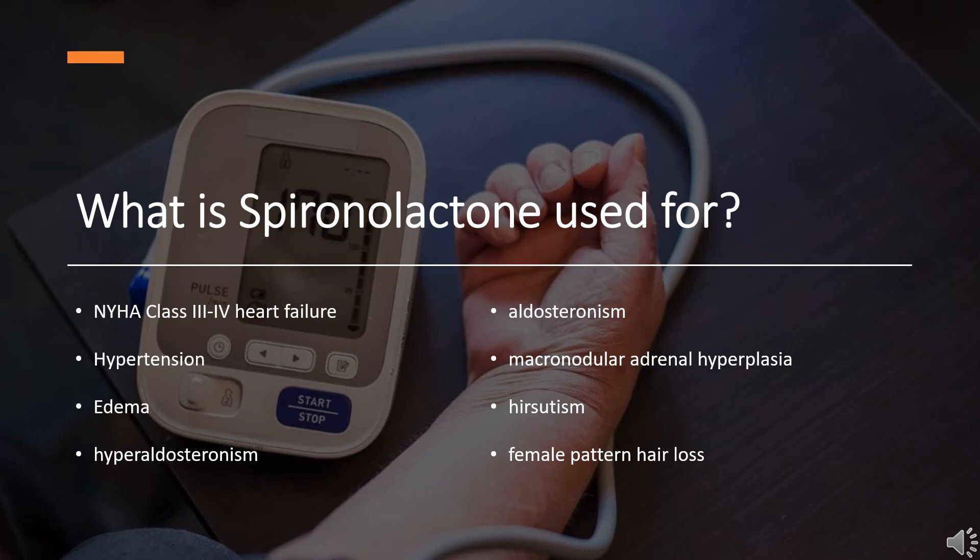Short-term preoperative treatment of patients with primary hyperaldosteronism. Diagnosis of primary aldosteronism. Long-term maintenance therapy for patients with discrete aldosterone-producing adrenal adenomas who are not candidates for surgery, and for patients with bilateral micro- or macronodular adrenal hyperplasia, and idiopathic hyperaldosteronism. As spironolactone has antiandrogenic activity, its off-label uses include the treatment of hirsutism, female pattern hair loss, and adult acne vulgaris.